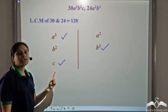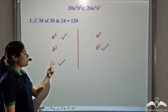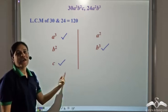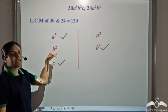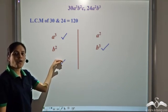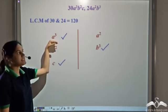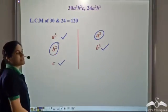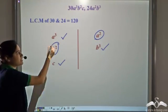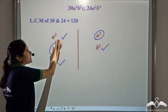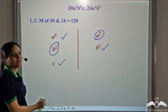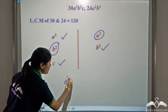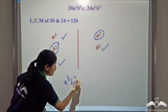Note that in the case of LCM, we also take variables which are not present in all the terms. In HCF, we only take variables which are present in all the terms — in this case a and b — and take the lowest powers. Whereas in LCM, we take all the variables and consider their highest power. So the LCM of the algebraic part is a³b³c.